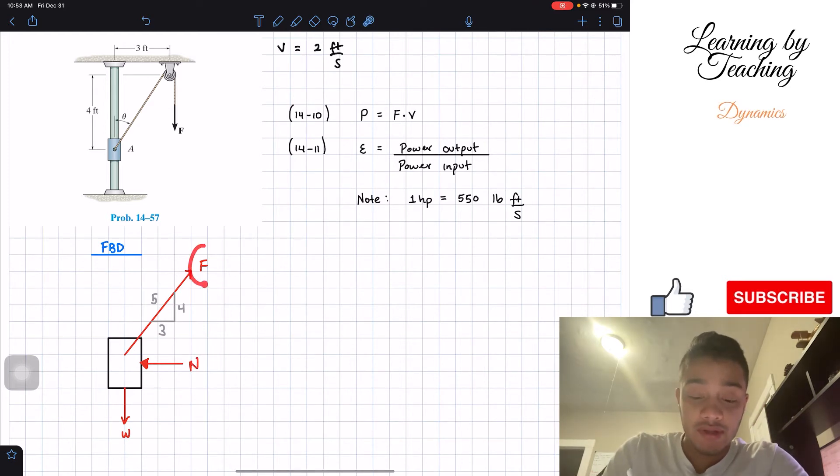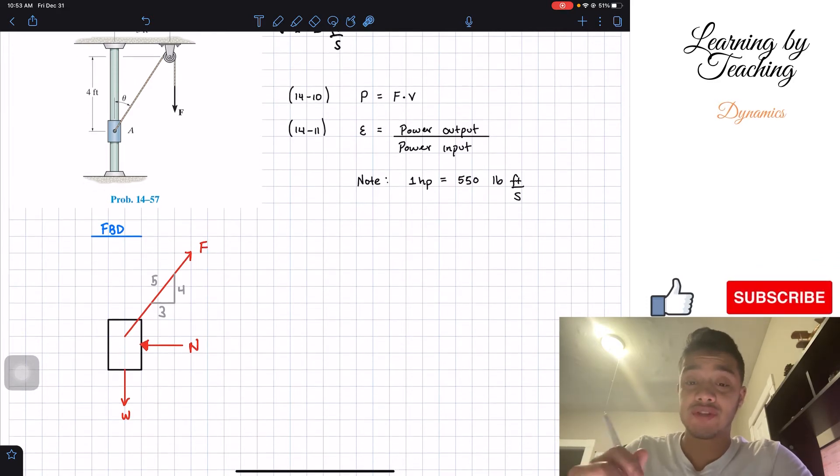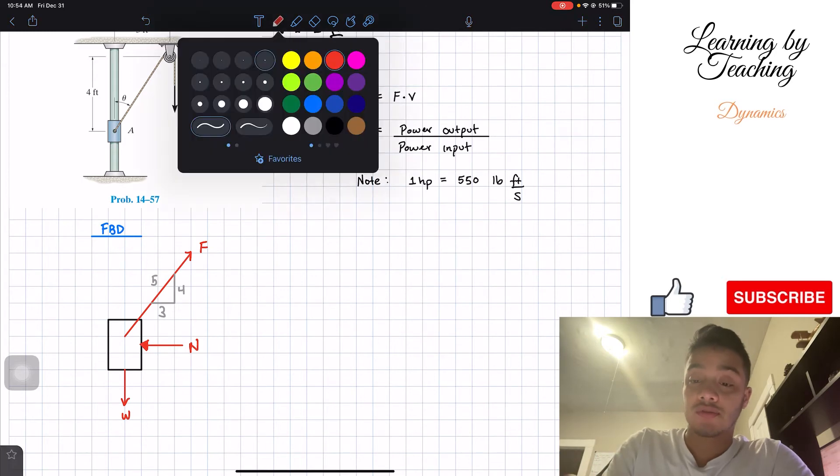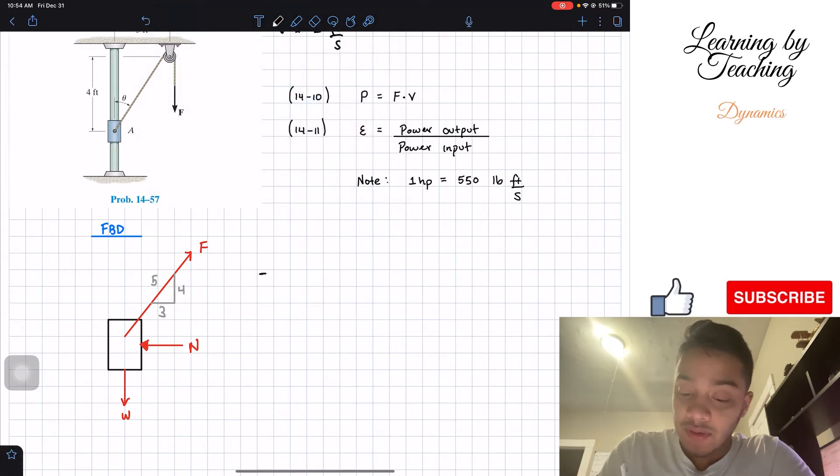So the main objective is to find this force F. We know the weight. Therefore, we're going to utilize the sum of the forces in the y-direction. So let's go ahead and do that. Sum of the forces in the y-direction. Going up is positive. That's my assumption.